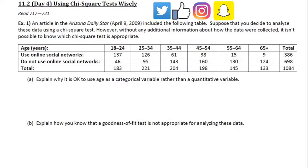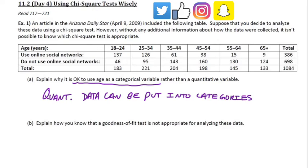Part A asks: explain why it's okay to use age as a categorical variable rather than a quantitative variable. Some people might think this should be strictly quantitative. But we learned in Chapter 1 that quantitative data can be converted into categories and then considered categorical data. That's what we're doing here—each age group is like a category.